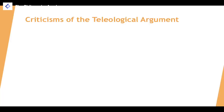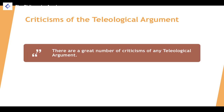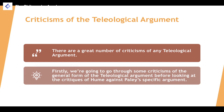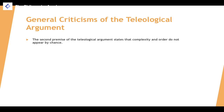Let's look at some criticisms of the teleological argument. A general criticism concerns the second premise, which states that complexity and order do not appear by mere chance. It's not entirely clear how this has been demonstrated to be true. We only use examples of man-made things to reach this conclusion. There's no evidence to suggest complex things can't appear out of chance — our only reference point is the technologies and things we can design on Earth.